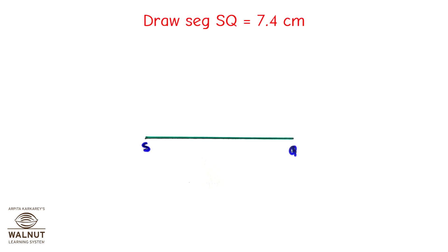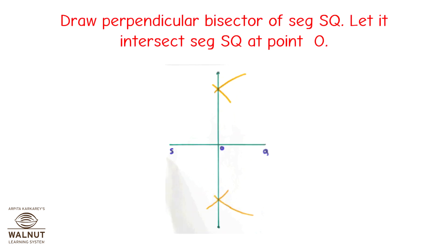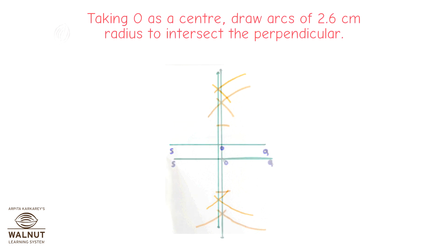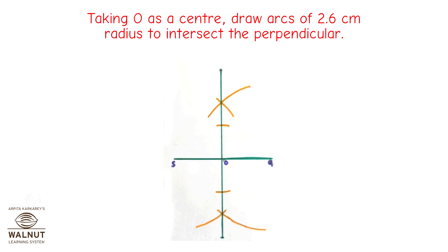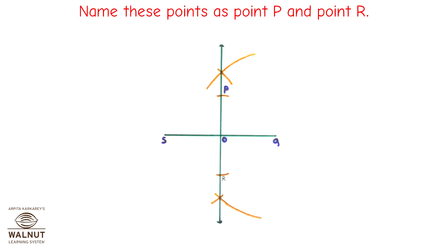Draw segment SQ which is equal to 7.4 cm. Draw the perpendicular bisector of segment SQ and let it intersect segment SQ at point O. Taking O as center, draw arcs of 2.6 cm radius to intersect the perpendicular. Name these points as point P and point R.